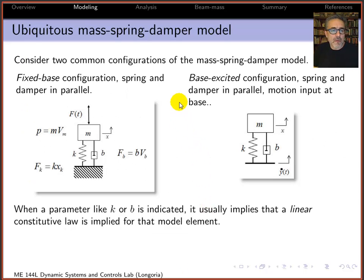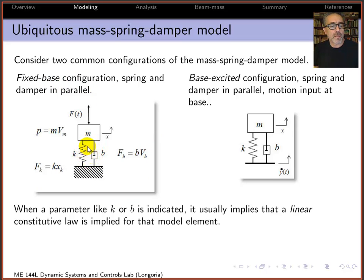We're going to be using a simple configuration: the beam we've used in the previous lab with a mass attached at the end, forming a very simple mass-spring-damper system that's easy to control and use. The mass-spring-damper model has two basic configurations. The one most familiar is the fixed-base configuration, where the spring and the damper are mechanically in parallel — meaning they have the same velocity, compressed and extended at the same velocity. The mass is connected to both, and I'm primarily talking about linear systems with linear constitutive relations for each element.